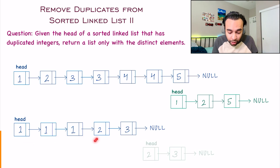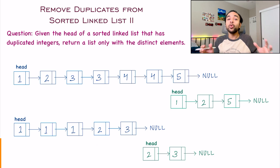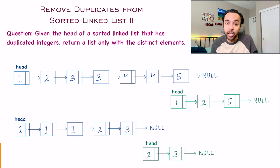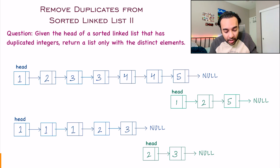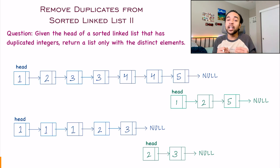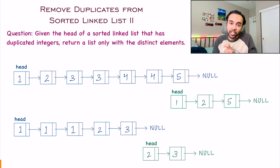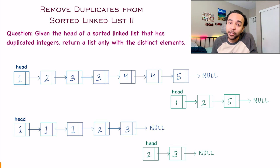So when finding the distinct elements, they are just two and three, so the resultant list will only have these two elements. No matter the number of duplicates, you have to remove all of them. If you feel the problem statement is now clear to you, feel free to first try it out — otherwise, let us dive into the solution.